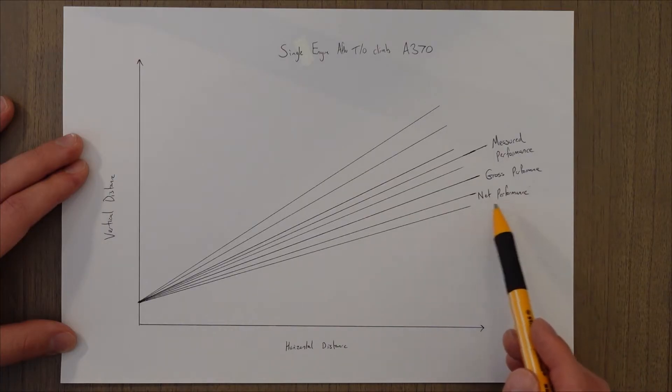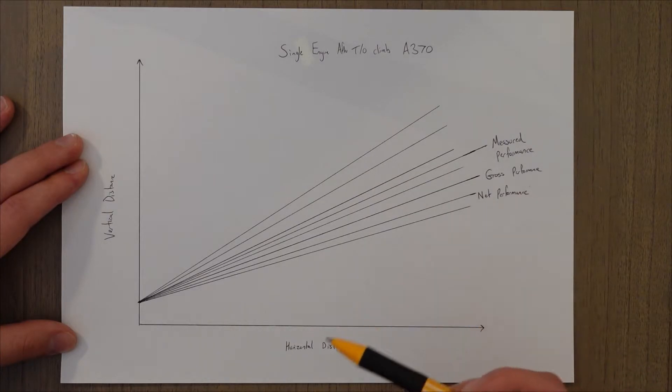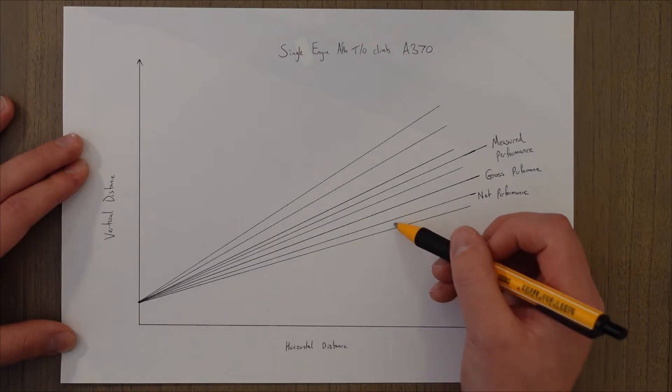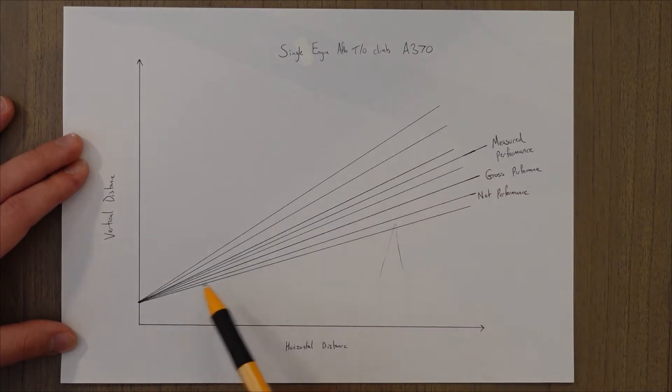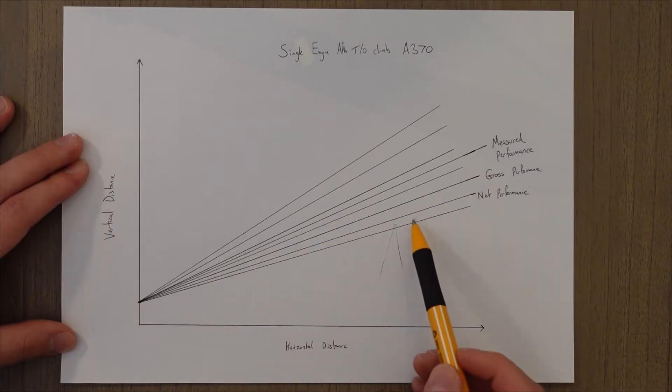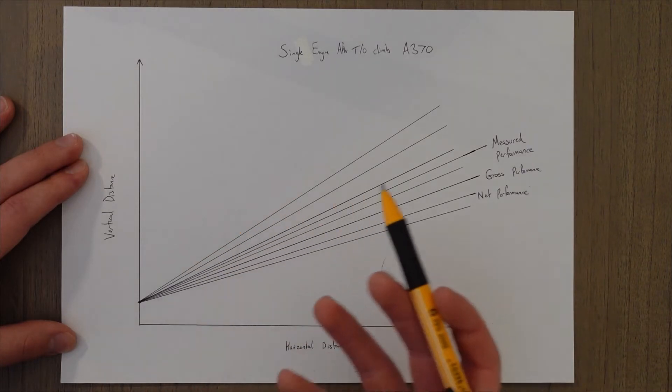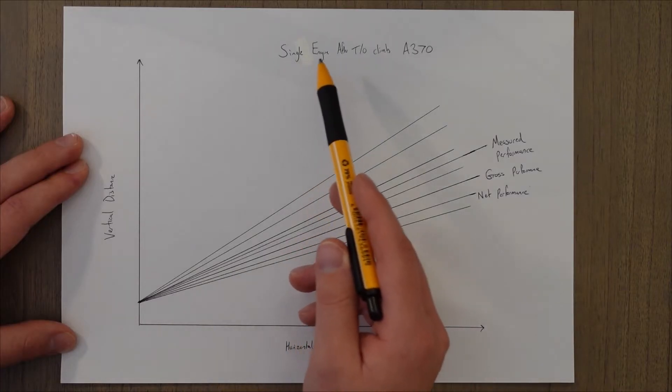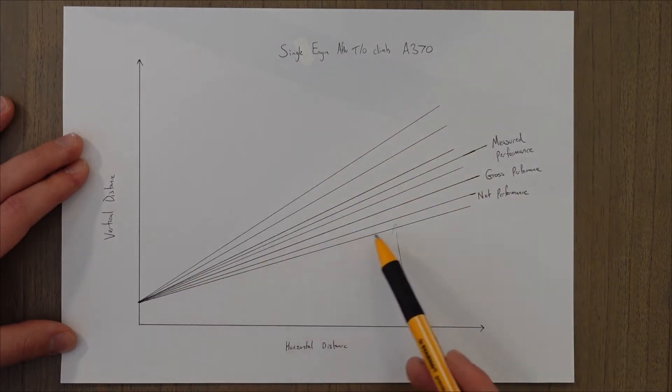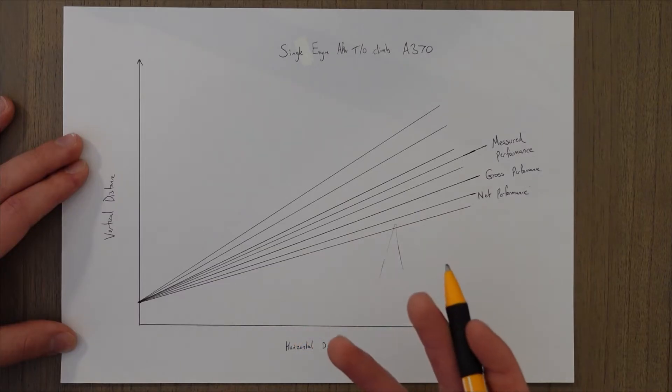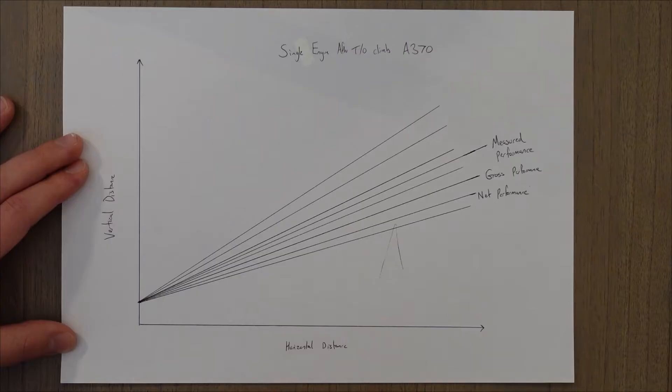This net performance figure is then used to determine the maximum values for weights, for example. In this example, we would use the net performance line to see if we can clear the obstacles after takeoff. So if there was an obstacle here like a mountain, we know that we'd be able to achieve it with our net performance, and the gross and the measured would be sufficient as well. This means that we can add weight to the aircraft up to the point that the single engine climb after takeoff of the A370 will achieve this net performance line.